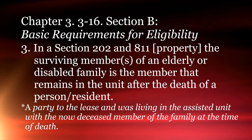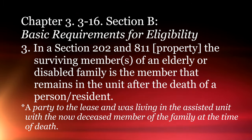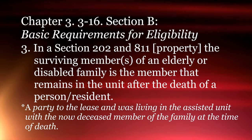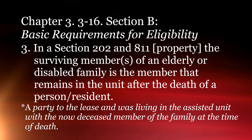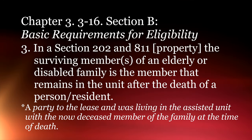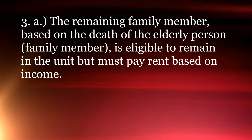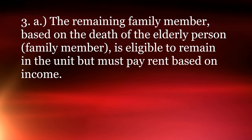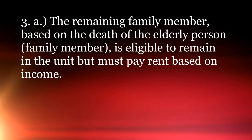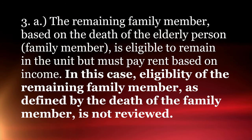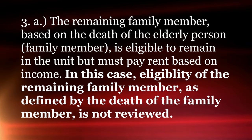In a Section 202 and 811 property, the surviving member of an elderly or disabled family is the member that remains in the unit after the death of a person who was on the lease and living in the unit — they will become the head of household. The remaining family member under number one, based on the death of the elderly person, would have to qualify and be eligible based on income. In this case, eligibility of the remaining family member as defined by the death of the family member is not reviewed.